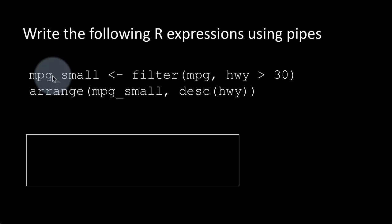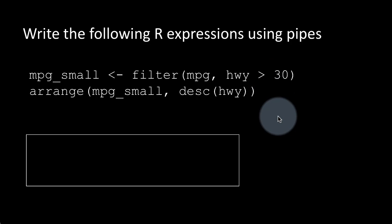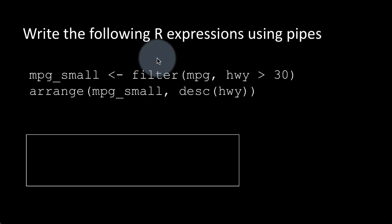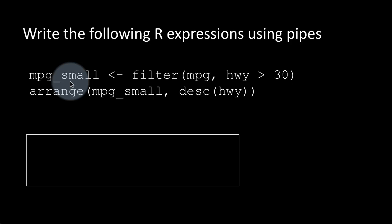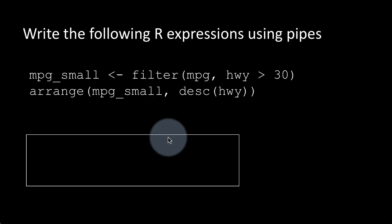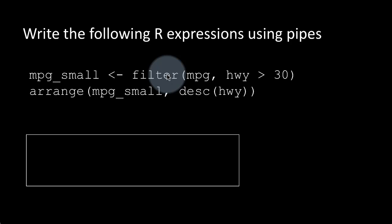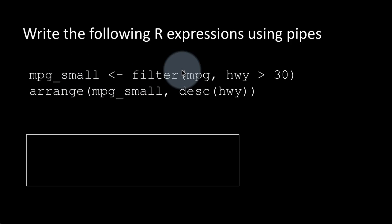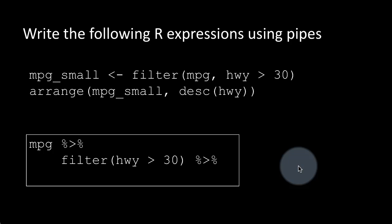Now let's look at pipes in the context of dplyr functions. Say mpg_small <- filter(mpg, hwy > 30), then we arrange that by descending order of hwy. Clearly this is a pipeline: we take mpg, push it through filter, take the result, push it through arrange. So we can write: mpg %>% filter(hwy > 30) %>% arrange(desc(hwy)). The pipeline is very clear — mpg flows into filter, and the result flows into arrange.